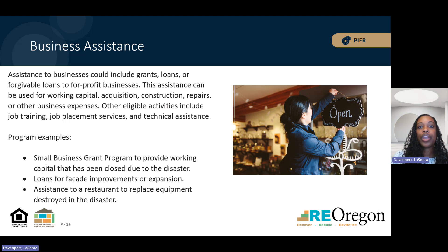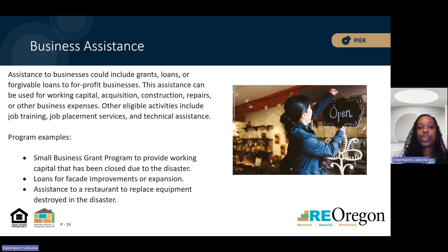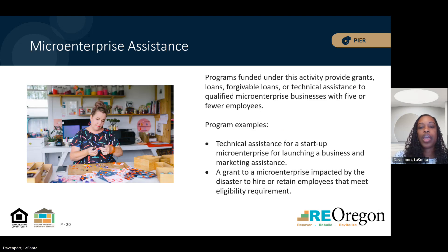Assistance to businesses includes grants, loans, and forgivable loans to for-profit businesses to use for working capital, construction, acquisition, or other business expenses. Examples include providing loans for facade improvements or assisting an impacted restaurant to purchase equipment that was destroyed. Micro-enterprises are defined as businesses with five or fewer employees. These types of businesses can receive grants, loans, or technical assistance. An example of micro-enterprise assistance is providing technical assistance to a startup business located in an impacted community to launch or market their business. Another example is providing a grant to hire or retain employees.